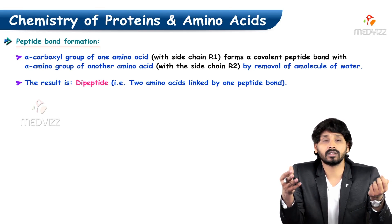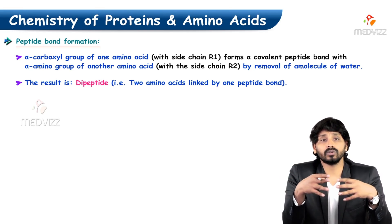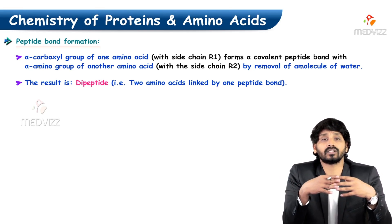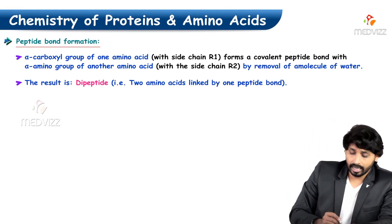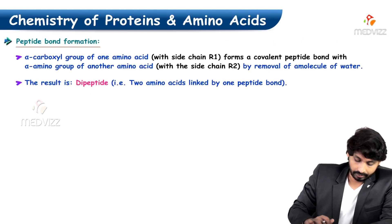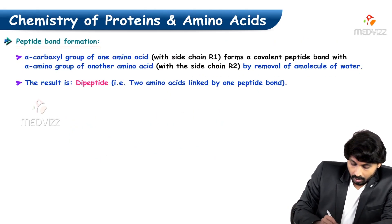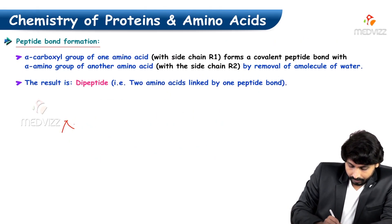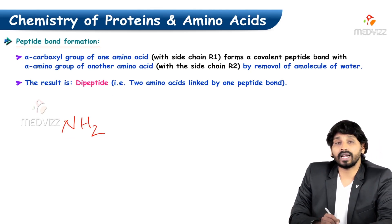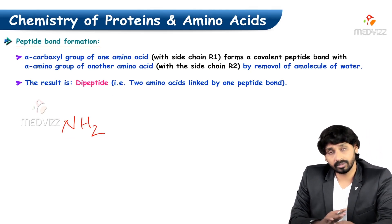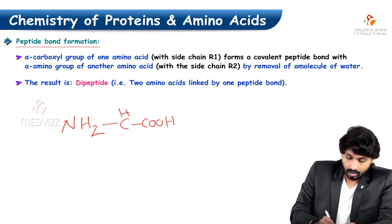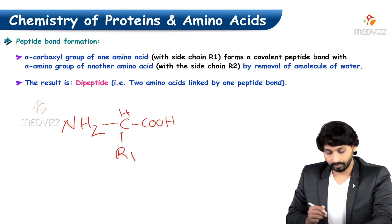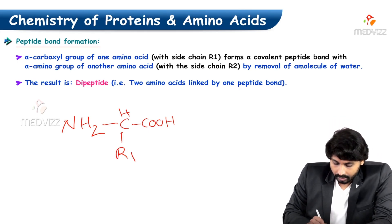Before studying peptides and proteins, it is very important to understand peptide linkage and how a peptide bond is formed. For convenience, I am writing NH2 for the amino group and COOH for the carboxyl group. This represents amino acid one.